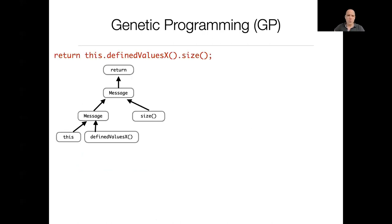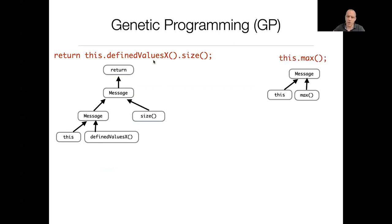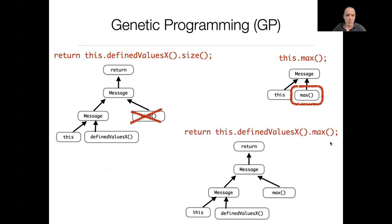Here is a small example. An expression can be represented using a tree. If we have two individuals — one on the left and one on the right — assuming they belong to the same population at a given time, new individuals can be formed by recombining parts of those trees. For example, a node from one tree can replace the corresponding node in another to form a new, shorter program. Hopefully, this new program will be better than the two parents in terms of the fitness function.